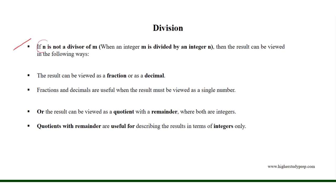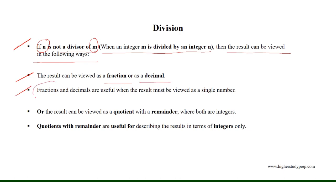If n is not a divisor of m, when an integer m is divided by an integer n, then the result can be viewed in the following ways. The result can be viewed as a fraction or as a decimal, where fractions and decimals are useful when the result must be viewed as a single number.